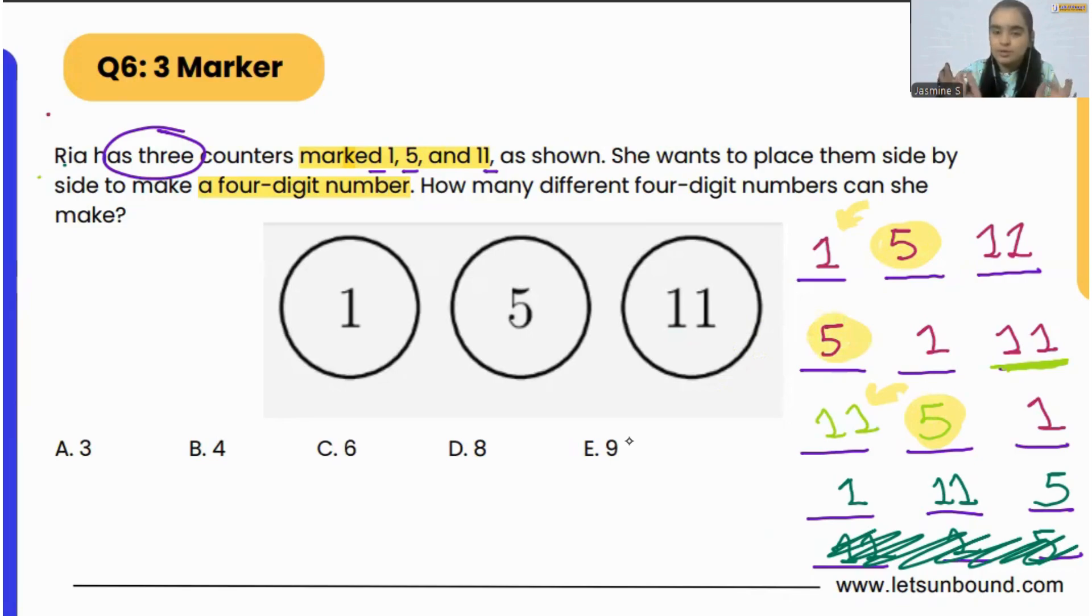And then one number can be where 5 is in the end. So we can make only four different numbers. I hope it makes sense, and we got our correct answer: option B, four.